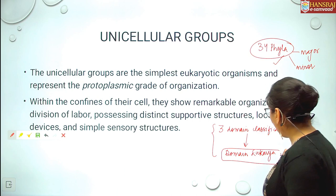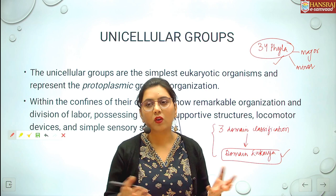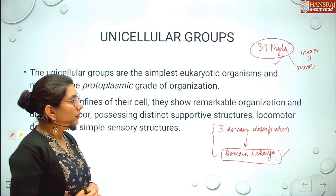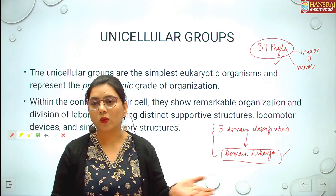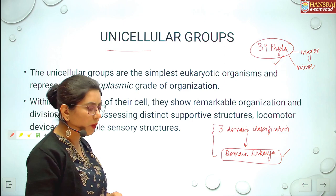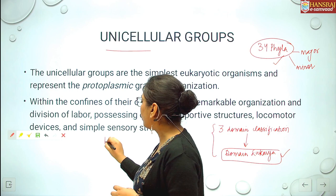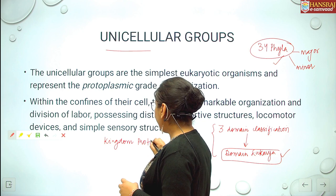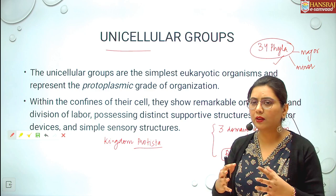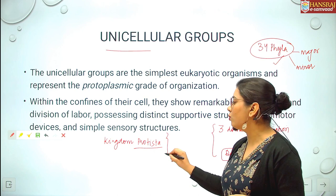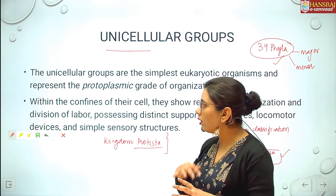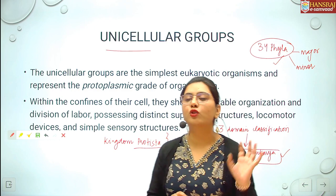Eukaryotic animal life can be very simple or very complex in body plan. The simplest forms are grouped under unicellular groups. In the four, three, and five kingdom classifications, these unicellular groups were grouped together in Kingdom Protista, which included unicellular eukaryotes with colony-forming habits. Today, Kingdom Protista does not hold the status of a taxon, and all those groups have been classified as phyla under domain Eukarya.